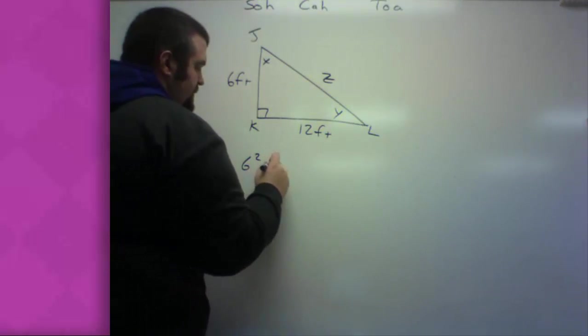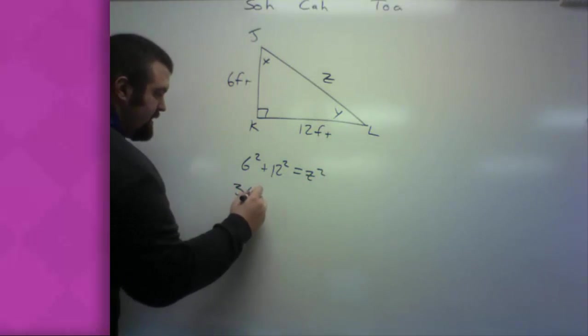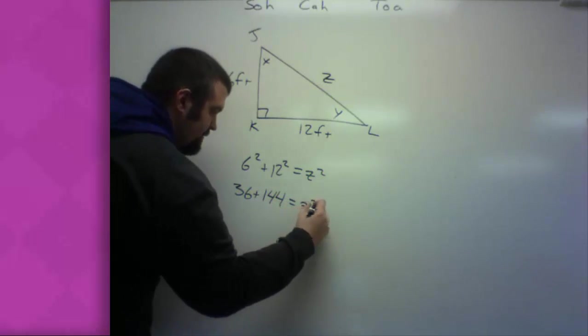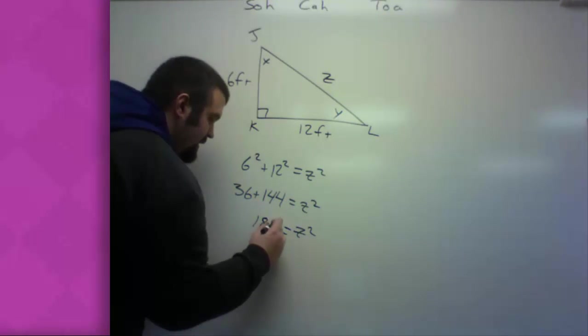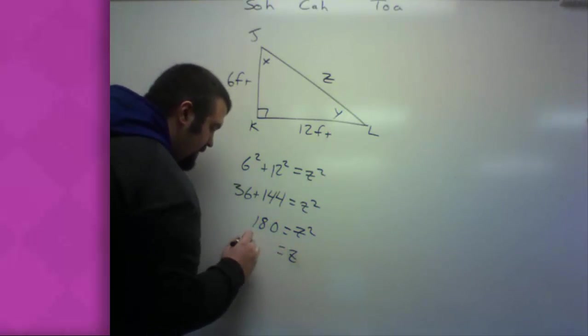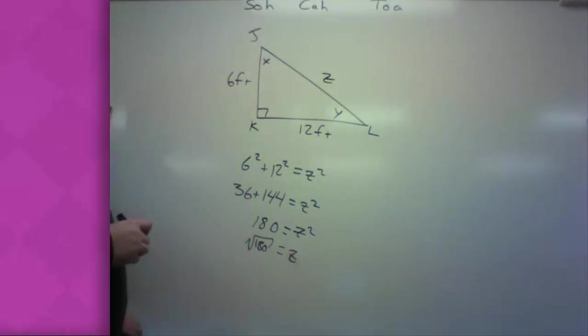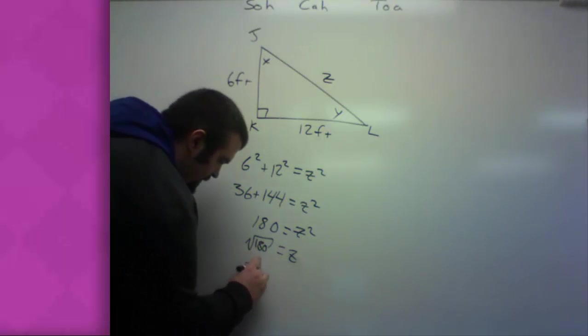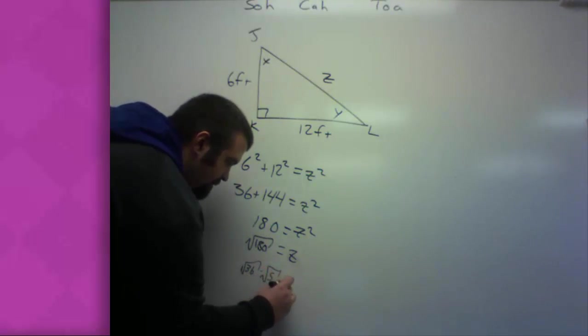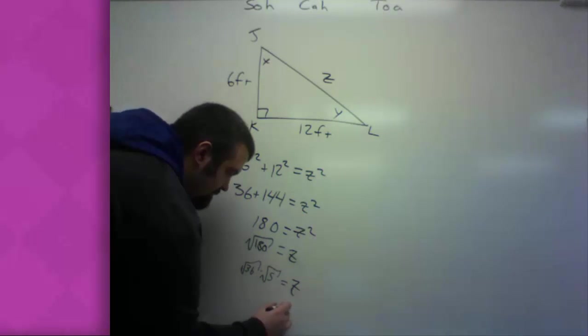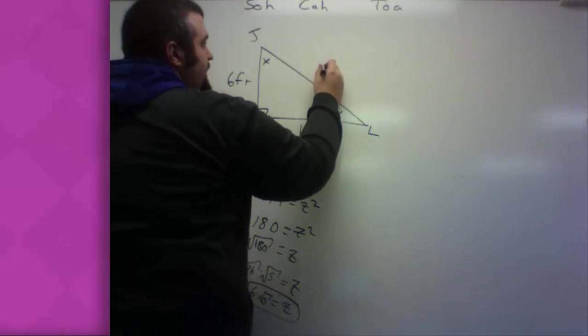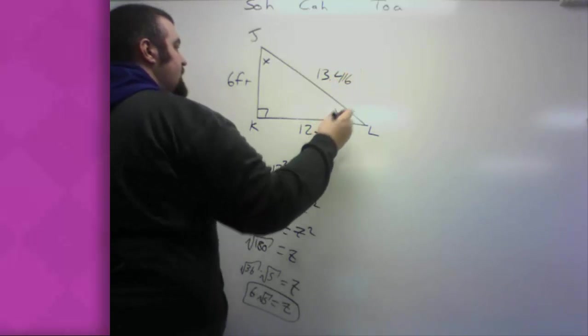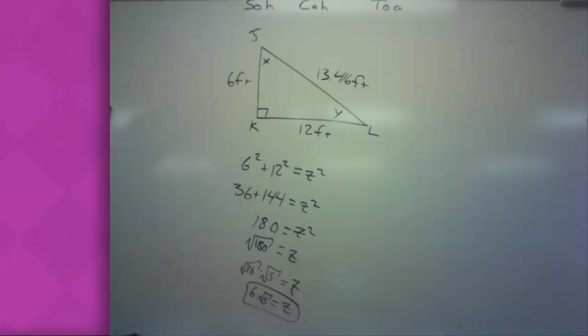By the Pythagorean theorem. 6 squared plus 12 squared equals z squared. 36 plus 144 equals z squared. z squared equals 180. z is equal to the square root of 180. And let's see, 180. What numbers go into 180 that I know for sure? I think 36 goes into 180. I want to say 5 times. So, this is the square root of 36 times the square root of 5. Or, z is 6 times the square root of 5. So, if I actually plug it in and I get a number here, I get 13.416.